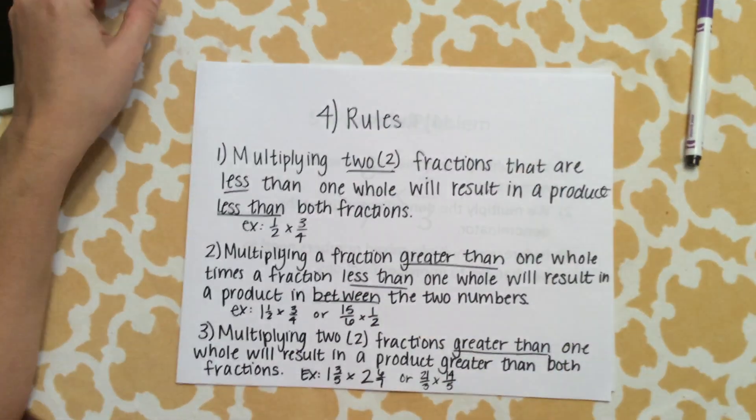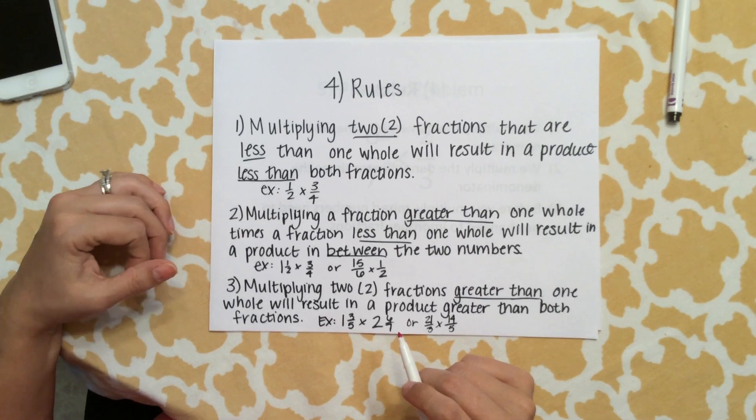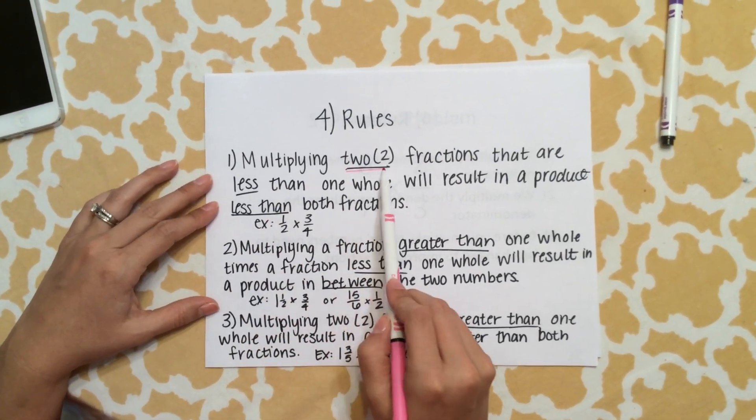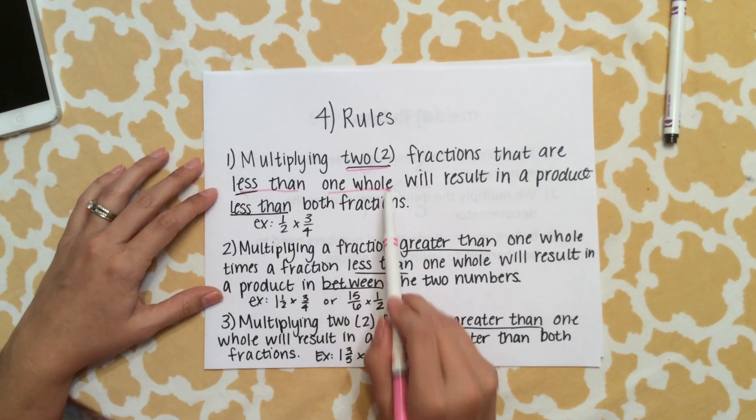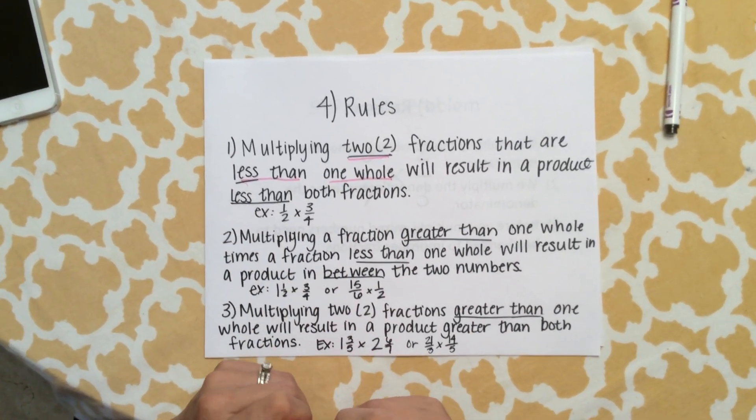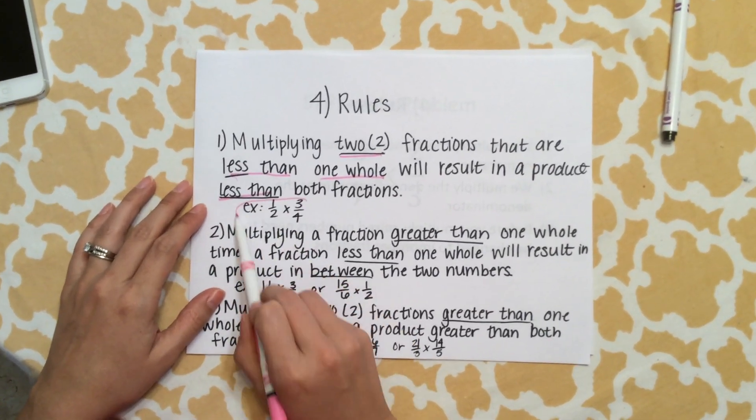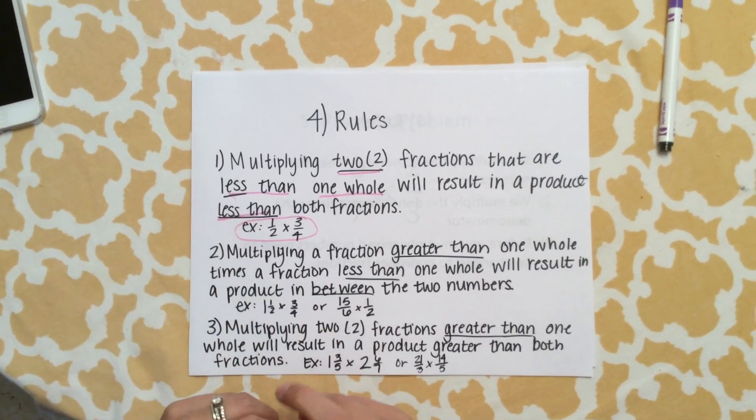Number four, the rules. You need to have all three rules written in your journal. Number one: when multiplying two fractions that are less than one whole, it will result in a product less than both fractions. Our example is 1/2 times 3/4—it's going to be less than both of these numbers.